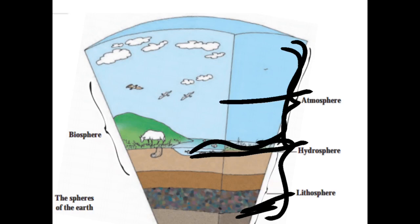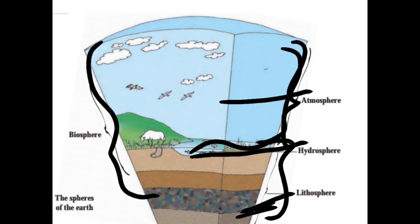The part of the atmosphere, the part of the hydrosphere, and the part of the lithosphere are collectively called the biosphere. So atmosphere, hydrosphere, and lithosphere — combining all three of these parts, we call it the biosphere. The living life on the Earth that fulfills its requirements — this is known as the biosphere.